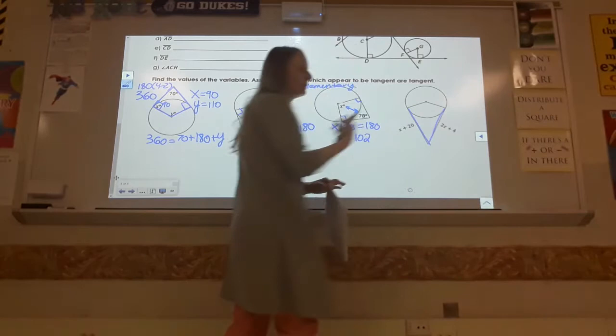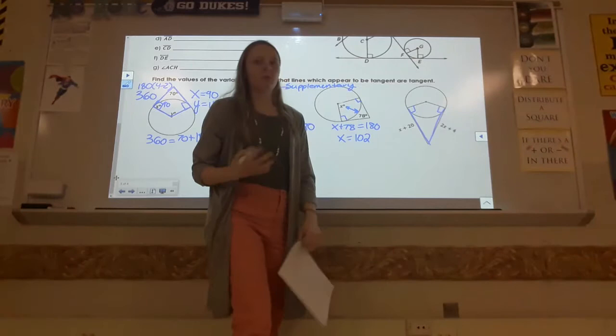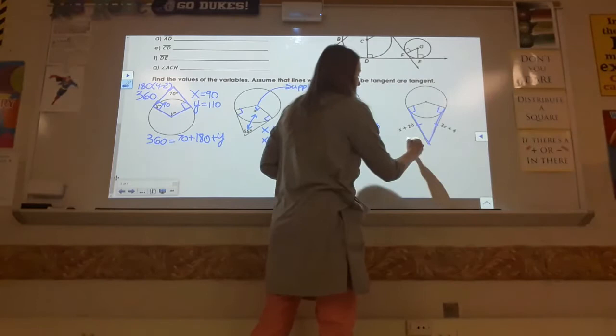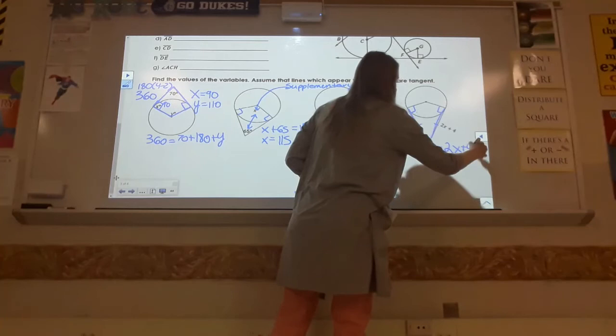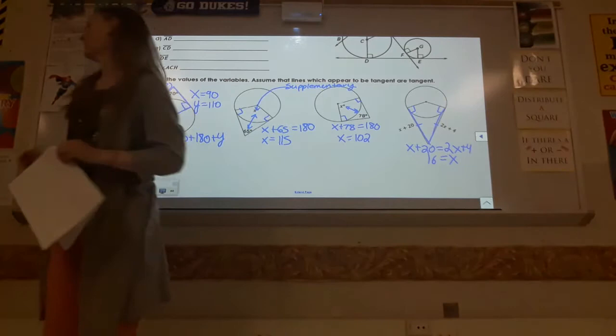Now this one is different, because it's working with lengths of sides instead of angles. So this is where Theorem 2 is going to come in — the clown hat rule. When you have two tangents coming out like this, we're not working with angles here. What we do know is that for that hat to work, both sides need to be congruent. So I'm going to have x plus 20 equals 2x plus 4. Those two tangent segments are always going to be equal. Just do some algebra, and you get x is equal to 16.